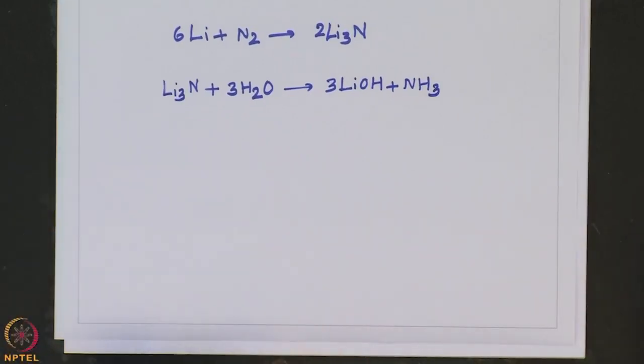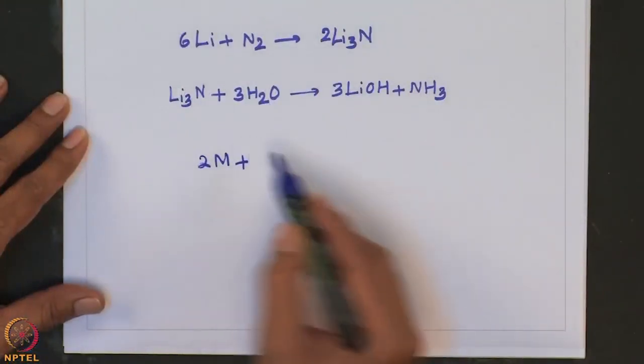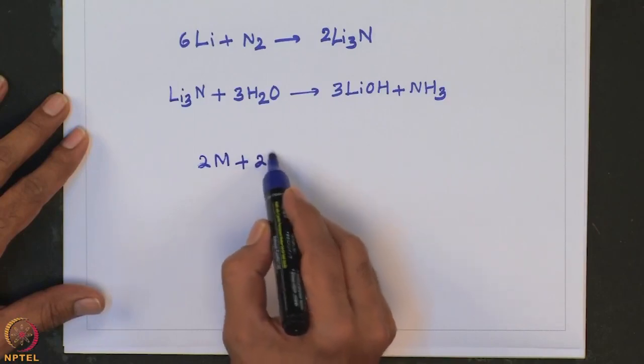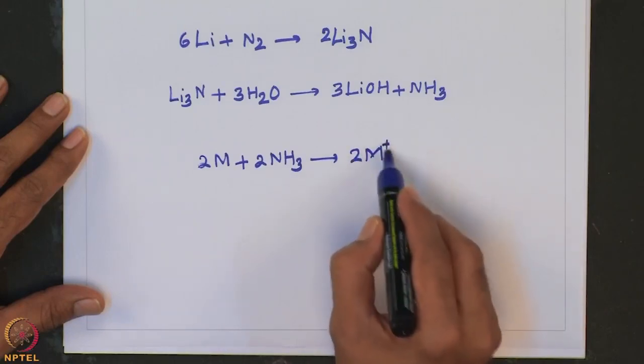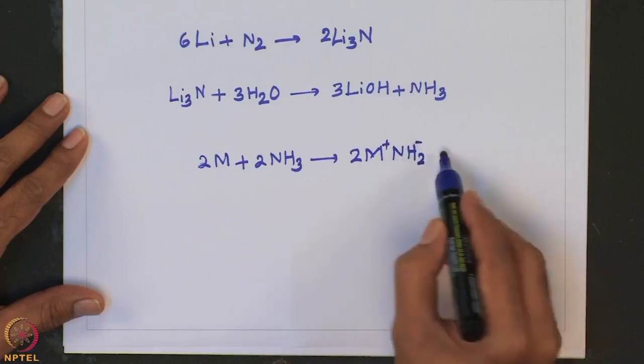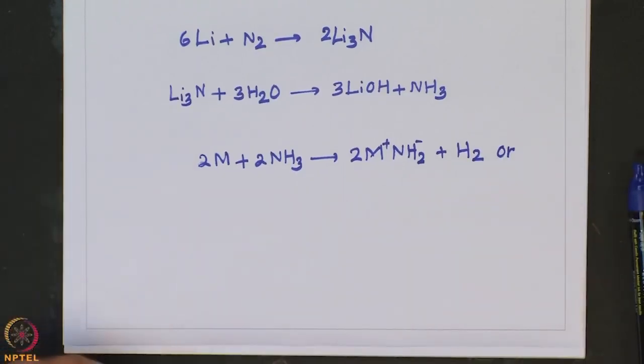Just like sodium hydroxide which is a base in water, sodium amide is a base in liquid ammonia. It is able to deprotonate acidic molecules such as R-H — that means if the H is quite acidic in an organic molecule, it can activate the C-H bond. If you take one of these alkali metals and put it into ammonia it forms solvated electrons, indicating that sodium amide is a base in liquid ammonia.